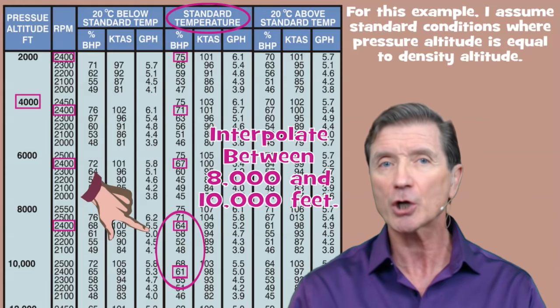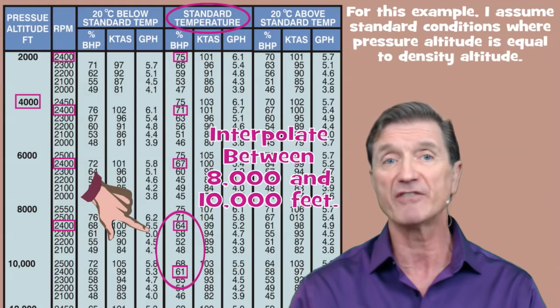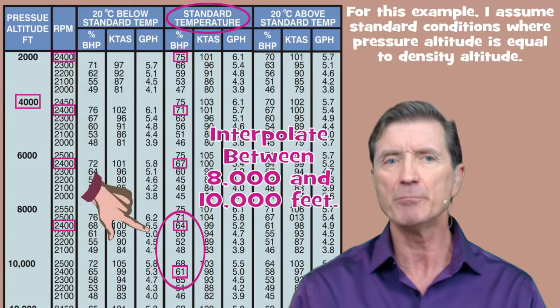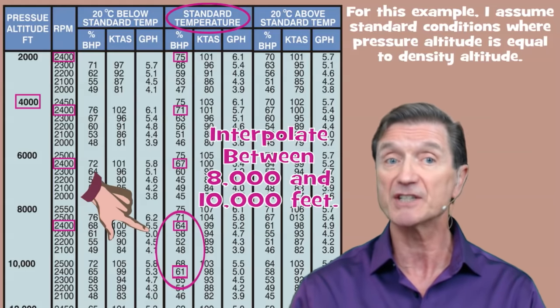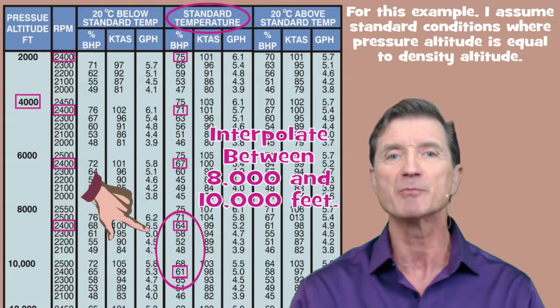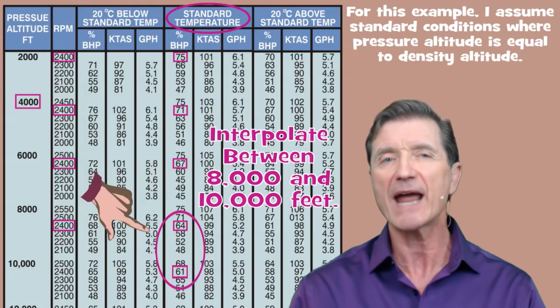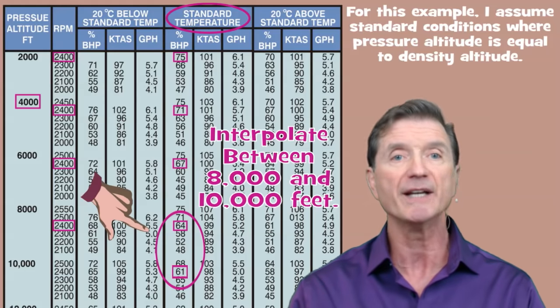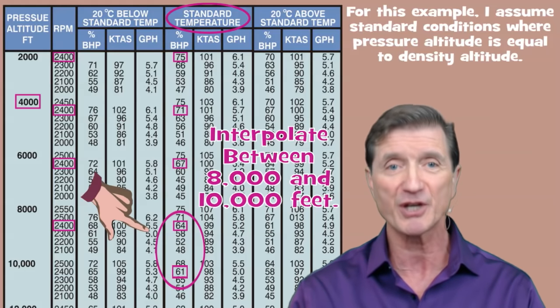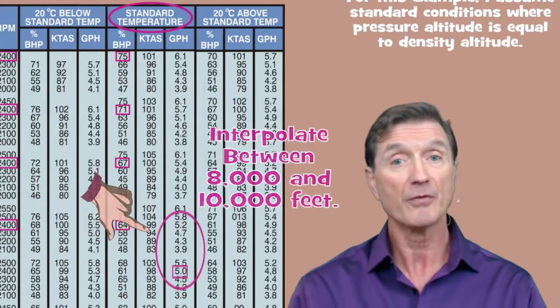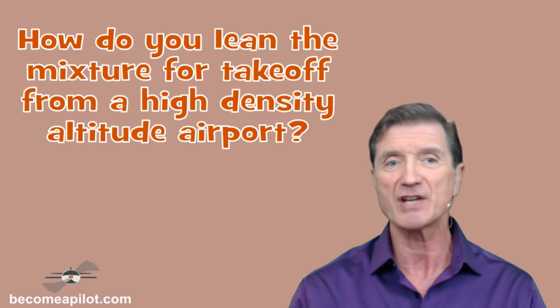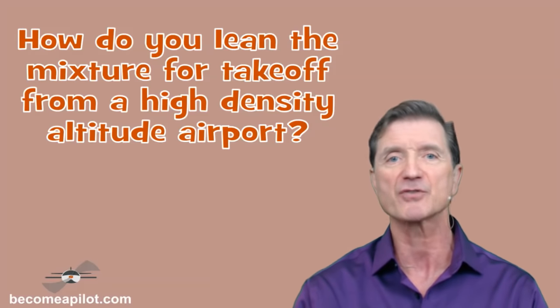Since detonation rarely occurs below power levels of 70%, there's little chance of detonation. So the pilot should have leaned the mixture for takeoff, especially since the Stinson's fuel enrichment valve is pumping an extra 15% of fuel into the carburetor's throat with the throttle in its full forward position. So, how do you lean the mixture for takeoff from a high density altitude airport — an airport with a density altitude above 4,000 feet?